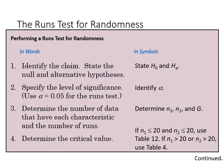These are the steps for the runs test. First we identify the claim in terms of our null and alternative hypothesis. We specify our level of significance, our alpha. We determine the number of data that have each characteristic and the number of runs, so that will give us n1, n2, and G.